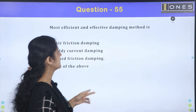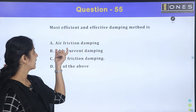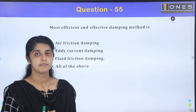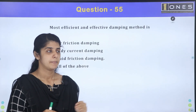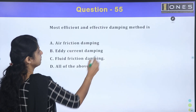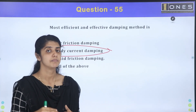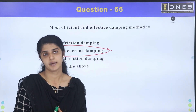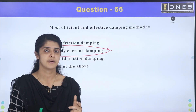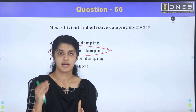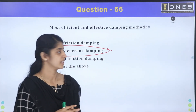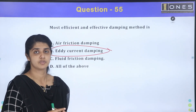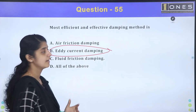The most efficient and effective damping method — the options are air friction damping, eddy current damping, and fluid friction damping. The most efficient method is eddy current damping. For PMMC instruments, eddy current damping is used. Fluid friction damping is used in vertical arrangement instruments.